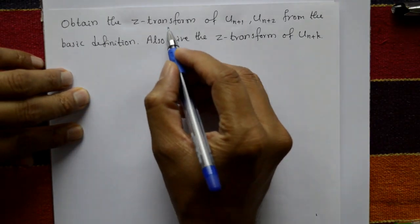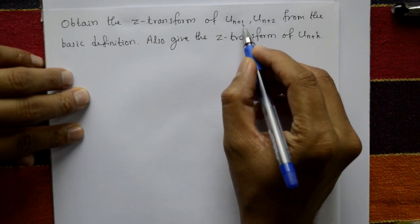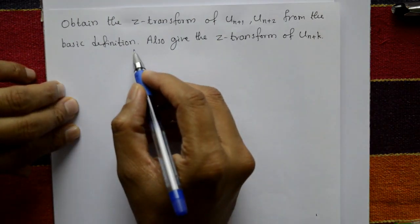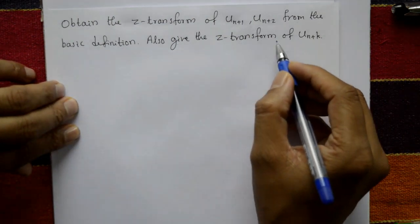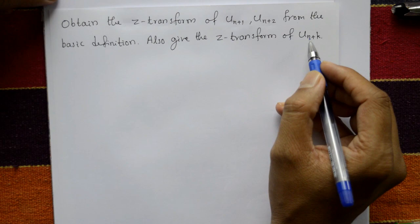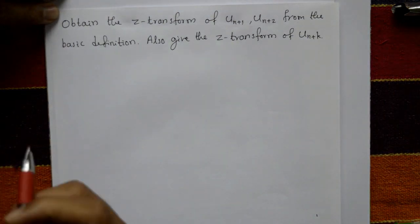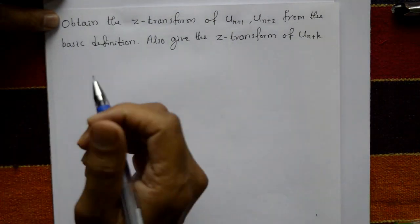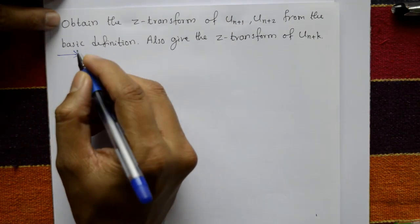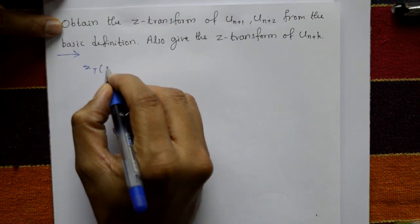Obtain the Z-transform of u(n+1) and u(n+2) from the basic definition, and also use the Z-transform of u(n+k). This is a very interesting problem.